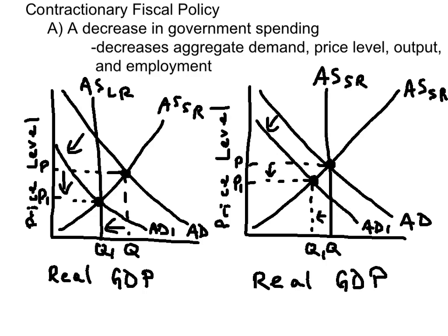One tool of a contractionary fiscal policy is a decrease in government spending. When the government cuts spending, that will decrease aggregate demand, reduce the price level, reduce real GDP, and employment.